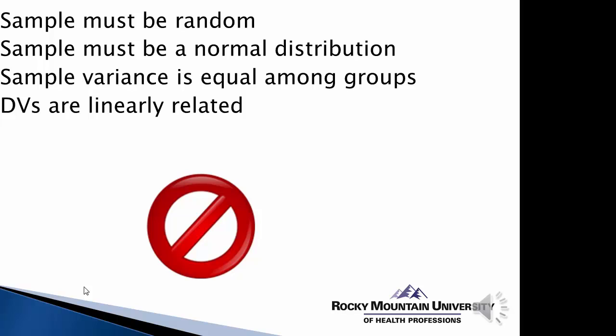Some assumptions and limitations of MANOVA: the dependent variables must be related to one another and have some shared variance. We don't want too much shared variance, as that would mean they're measuring the same thing, but they need some level of interrelationship, and that relationship should be linear. We assume the sample is random or sampled in a way that assures group equivalence. The outcome variables must be normally distributed, and variance should be equal among all groups, similar to what is required in ANOVA and t-testing.